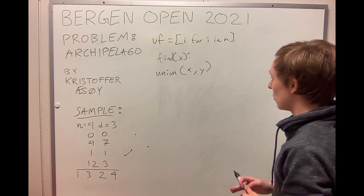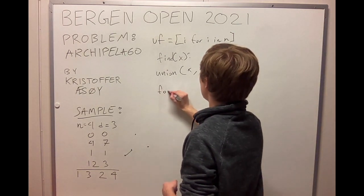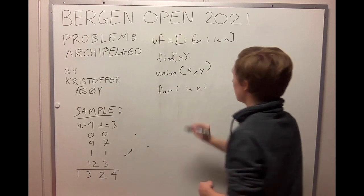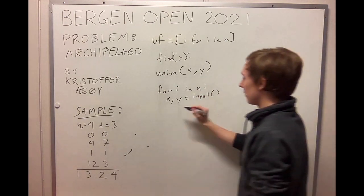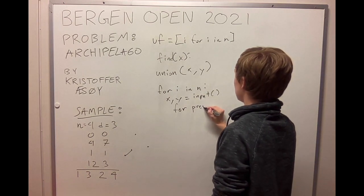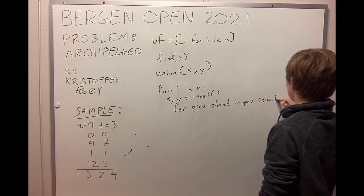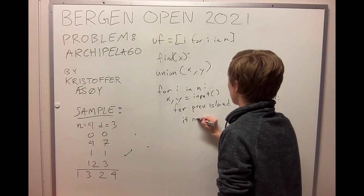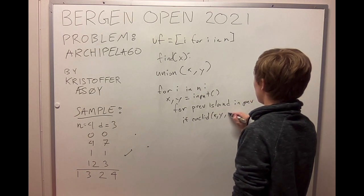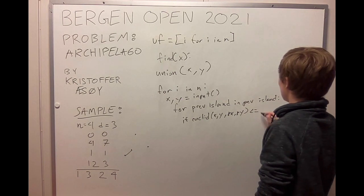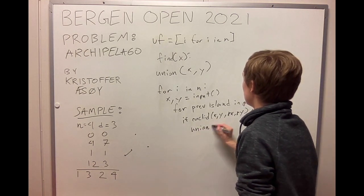But how do you find the edges that allow us to connect different islands? We can do this during input. We check through n islands and read them in as x and y for every single island. Then we compare them to all the previous islands we have found, checking if the Euclidean distance from x, y to the previous x and previous y is less than or equal to the distance given in the input.